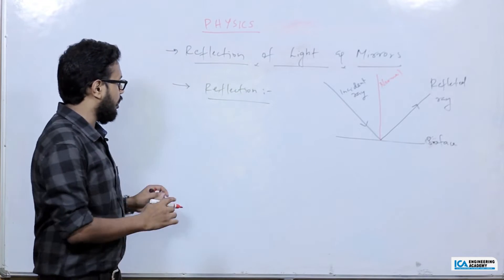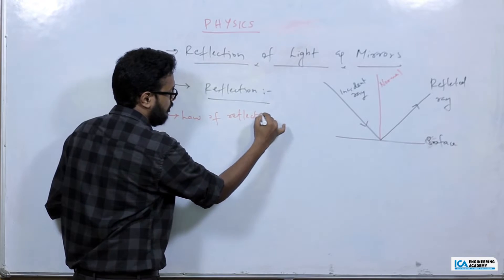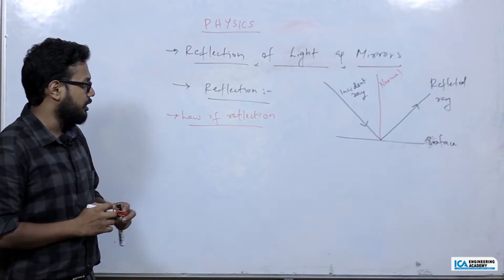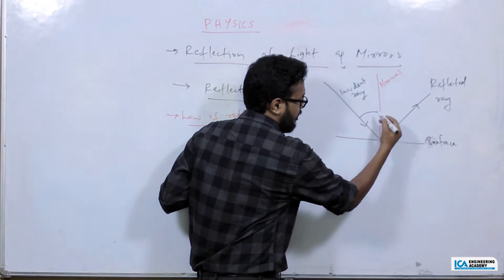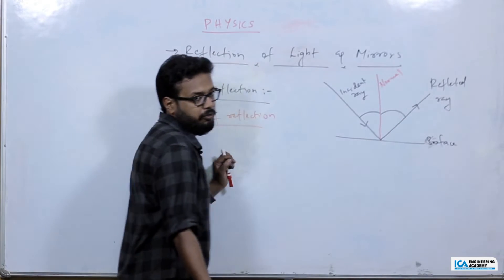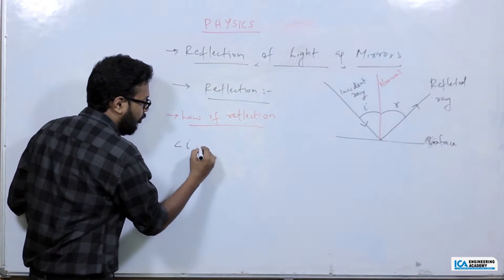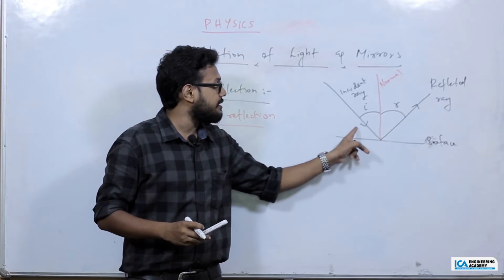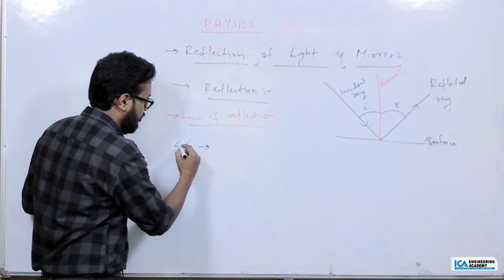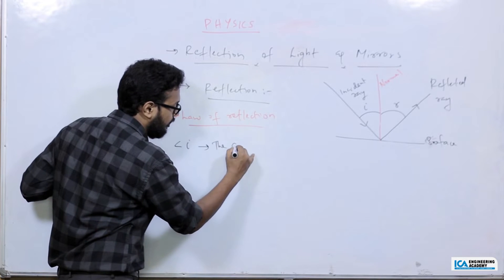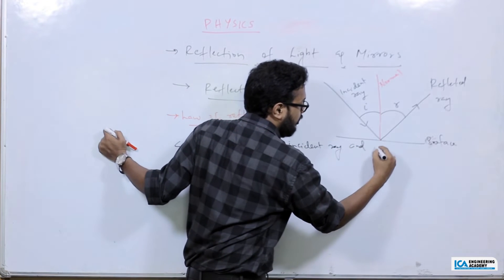The law of reflection states that the angle of incidence is always equal to the angle of reflection. The angle of incidence is the angle between the incident ray and the normal.